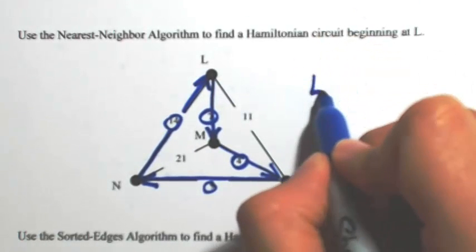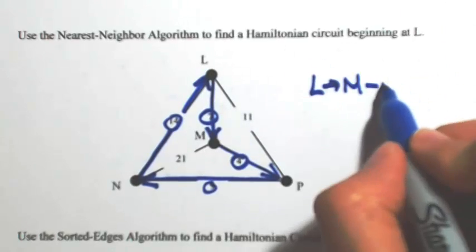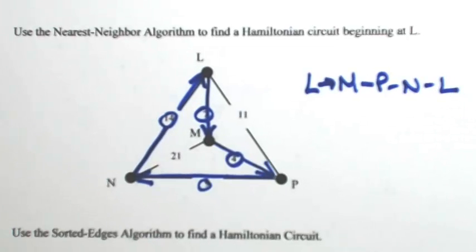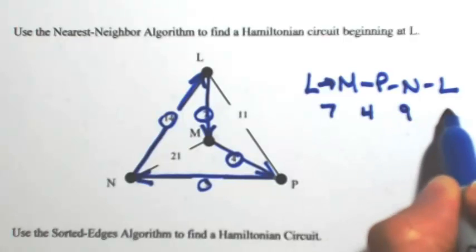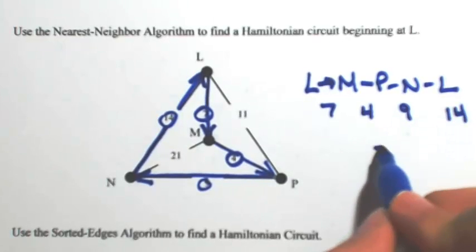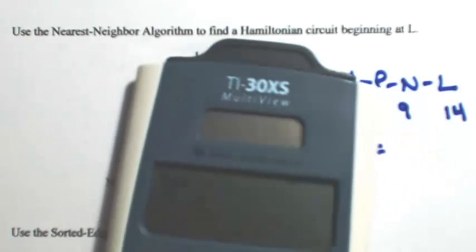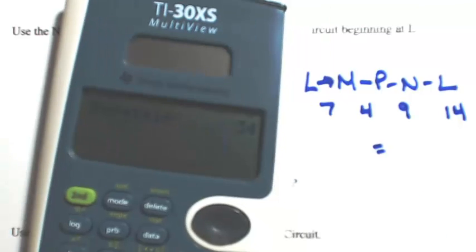So the Hamiltonian circuit is from L to M to P to N back to L with a cost of 7, 4, 9, and 14. So this one has a cost of 7 plus 4 plus 9 plus 14, which is 34.